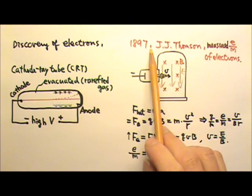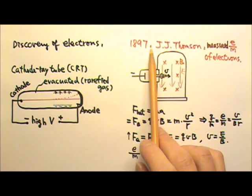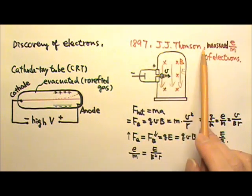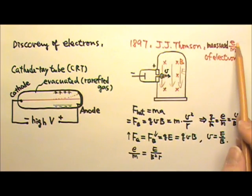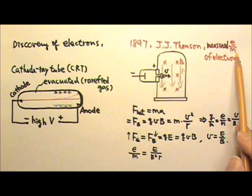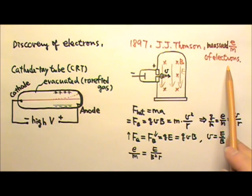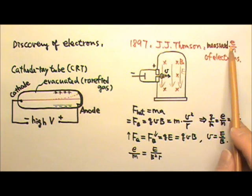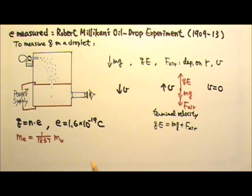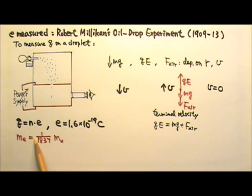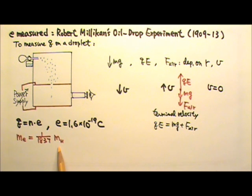Because back in 1897, J.J. Thomson had already measured the e over m ratio for electrons. Now with the elementary charge measured by Millikan, we have the mass of the electron, which is about 1/1837th of the mass of a hydrogen atom, just as expected by J.J. Thomson.